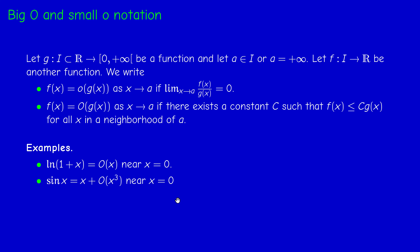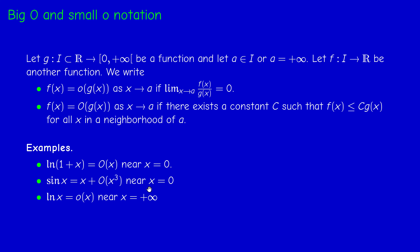Also, sin(x) can be written as x + O(x³). Why? Because sin(x) = x − x³/6 + ···, so the higher-order terms are O(x³), i.e., less than a constant times x³. Near infinity, ln(x) is a small-o of x, because ln(x)/x tends to 0 as x tends to infinity. These are known facts, and we will encounter other examples in the exercises.